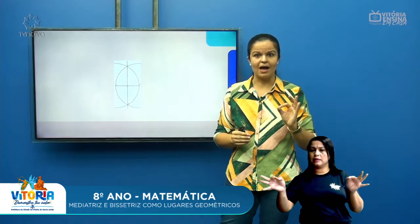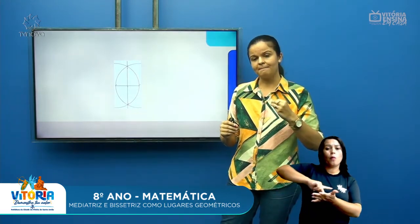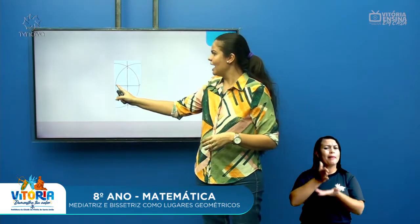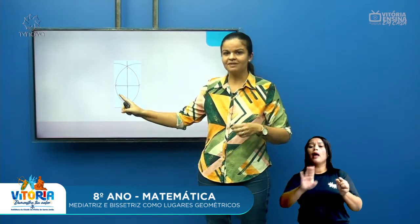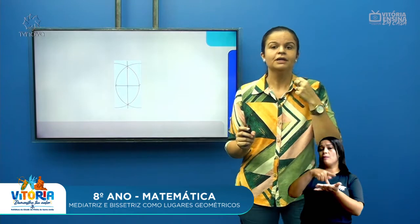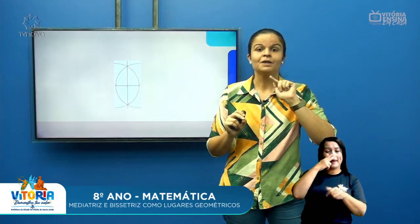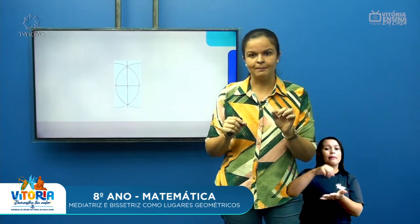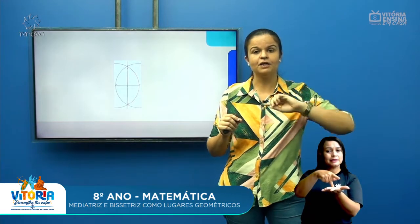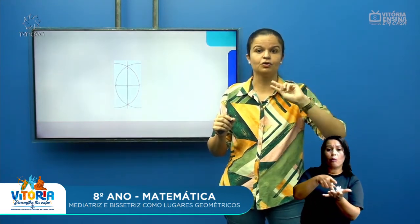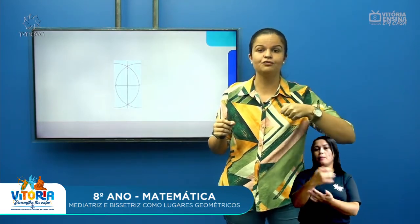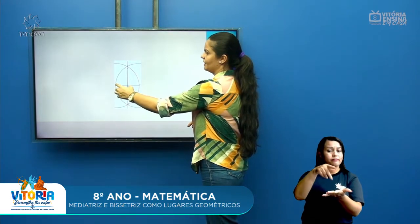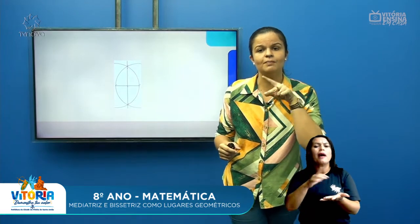Ao traçar o meu segmento AB, eu abri o compasso em uma abertura qualquer, mas maior do que a metade. É só visualizar o centro da reta e abrir o compasso um pouco maior do que a metade. O compasso tem duas pontas: a ponta seca, que parece uma agulha ou alfinete, e a ponta grafite. A ponta seca é para fixar no papel, no caderno, para ele não se mover.